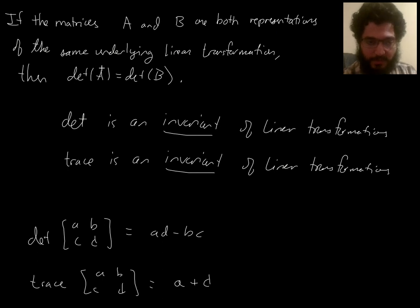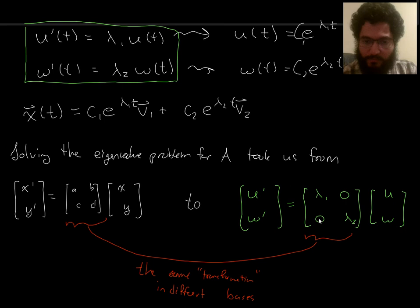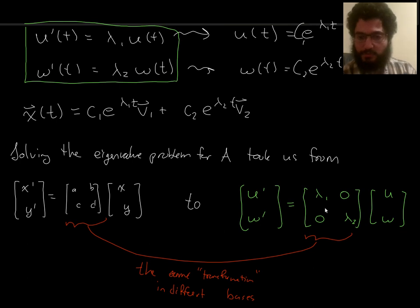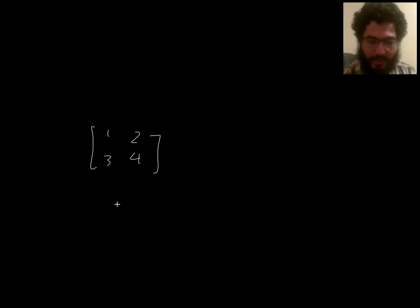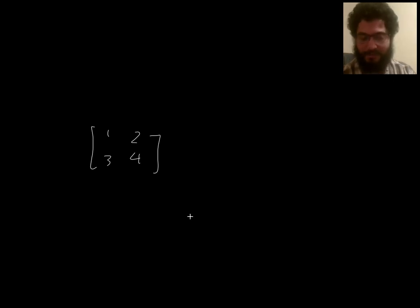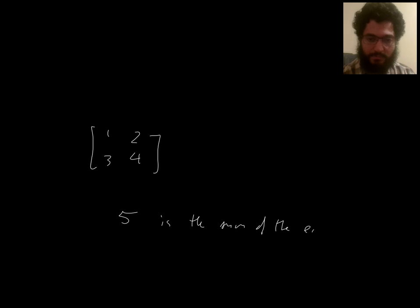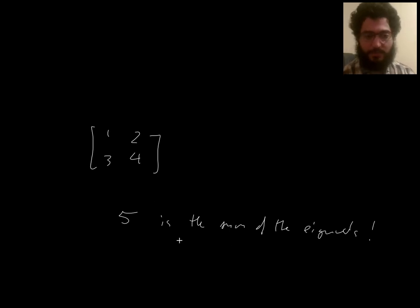Since the trace is invariant, if I rewrite my original matrix in its diagonal form, the trace A + D equals lambda 1 + lambda 2. So just like I can compute the determinant to know the product of eigenvalues, I can take the trace to know the sum of the eigenvalues. For the matrix [1, 2, 3, 4], the sum of eigenvalues is 1 + 4 = 5 — just add the diagonal entries. No polynomials needed. The trace is equally easy to calculate no matter how large the matrix is.